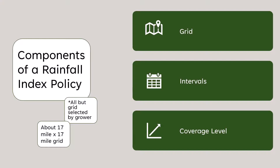For example, if you picked April and May and the average rainfall for that interval was 10 inches, and you selected 80% coverage, you would receive a payment if rainfall dropped below eight inches. Seven or seven-and-a-half inches would trigger a payment, but eight-and-a-half inches would not. It's a simple program: pick your level of average rainfall, and if it drops below that, you get a payment.